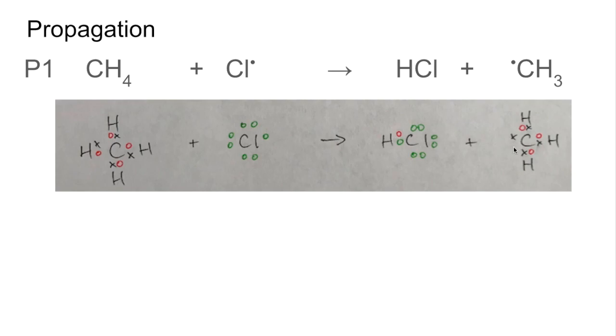So if we look at what's left of the methane, we're left with this. So you can see we've got an unpaired electron on the carbon, and so this is a radical. This is the methyl radical.